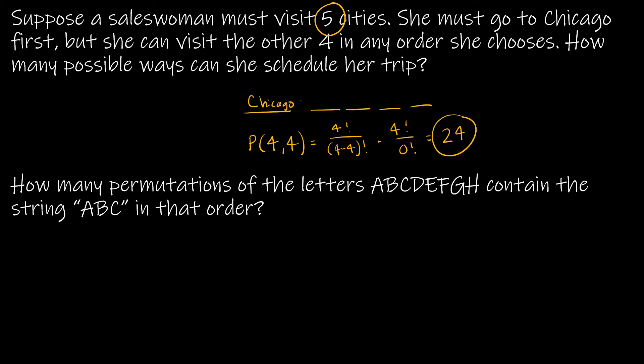Second example: how many permutations of the letters A, B, C, D, E, F, G, H contain the string 'ABC' in that order? The key insight is to treat 'ABC' as a single letter. That gives us six objects total: {ABC, D, E, F, G, H}. We then permutate all six, so the answer is P(6, 6) = 6! = 720 permutations.